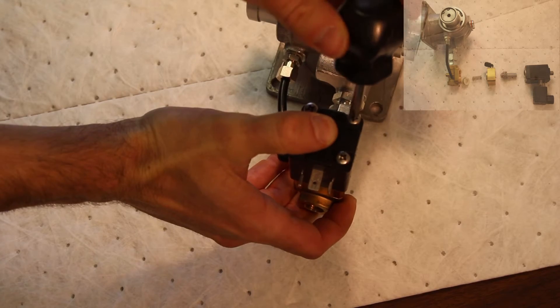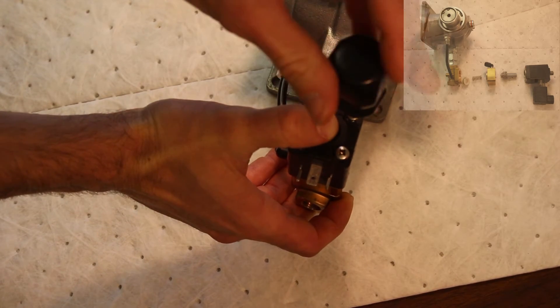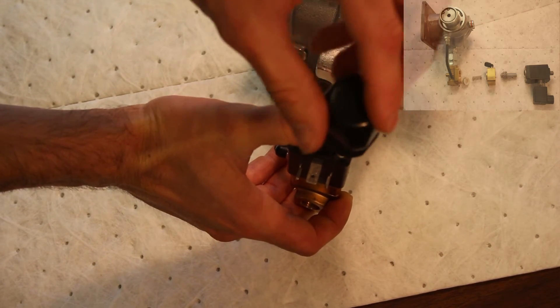Tighten the four bolts that hold the valve together. A moderate amount of tension will do. Too much may strip the threads from the brass housing.